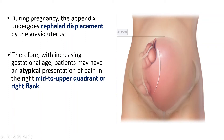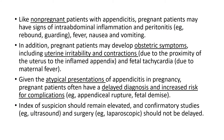Pain due to appendicitis during pregnancy occurs in atypical areas or positions. In addition to the atypical location of pain, pregnant patients may have signs of intra-abdominal inflammation and peritonitis, including rebound tenderness, guarding, fever, nausea, and vomiting. Additionally, pregnant patients may develop obstetric symptoms including uterine irritability and contractions due to the proximity of the uterus to the inflamed appendix.